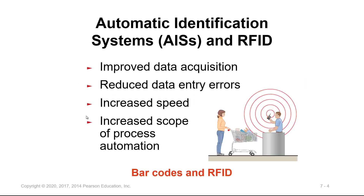Automatic identification systems and the use of radio frequency IDs improved data acquisition and reduced data entry errors. Scanning components or parts electronically will increase the speed of item tracking, processing, and shipping.